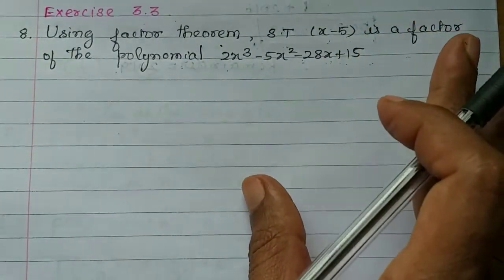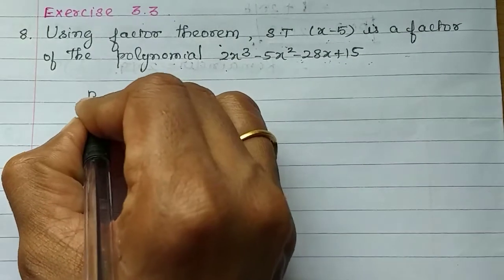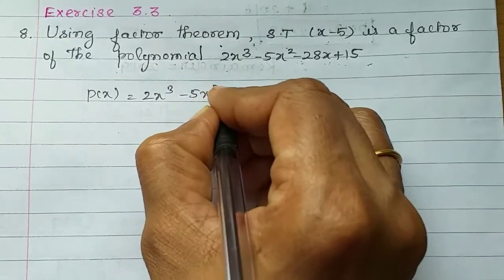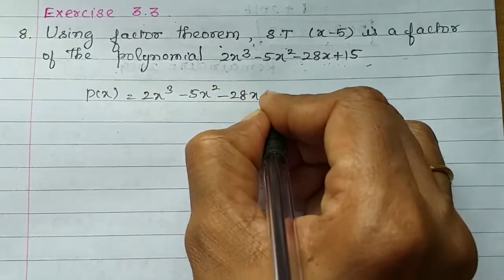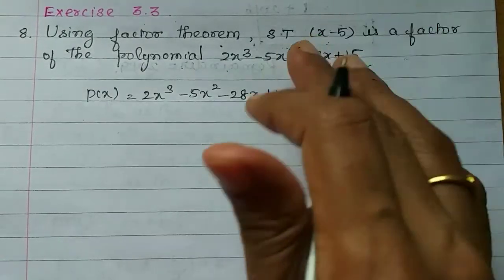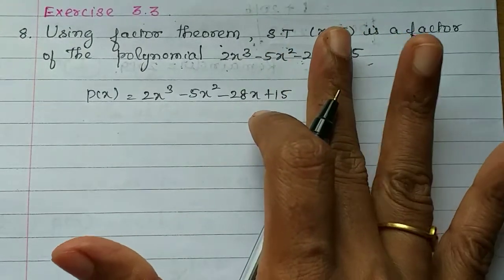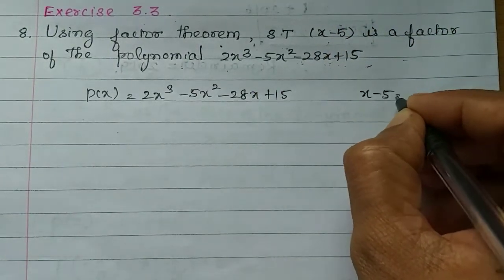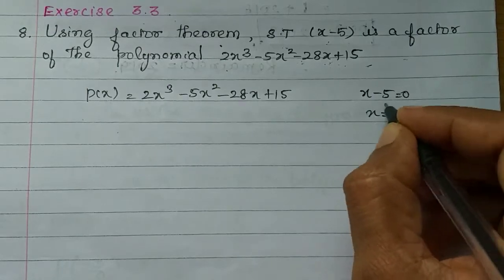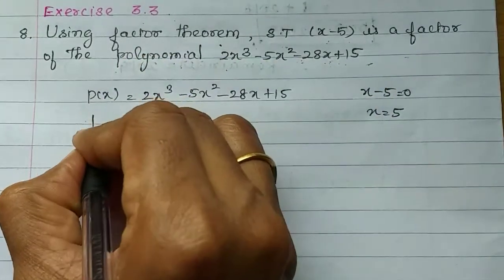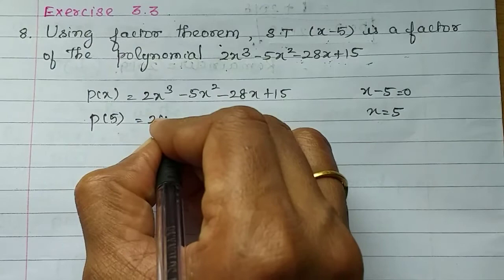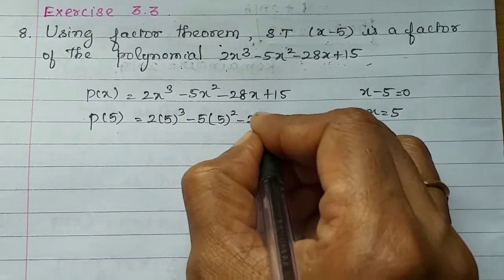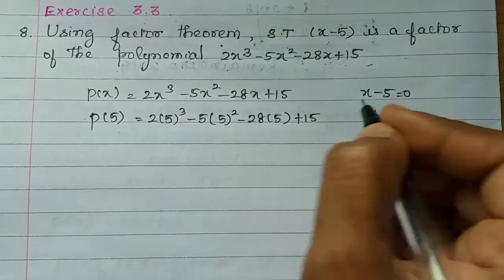Now P of x is equal to 2x cube minus 5x square minus 28x plus 50. We are checking whether x minus 5 is a factor. So x minus 5 equals 0, and x is equal to 5. We substitute: P of 5 is equal to 2 times 5 cube minus 5 times 5 square minus 28 times 5 plus 50.